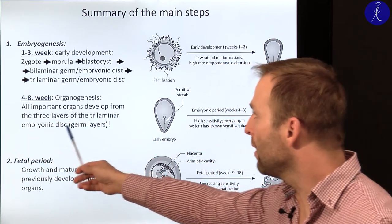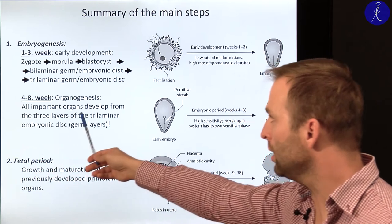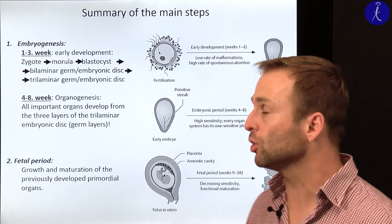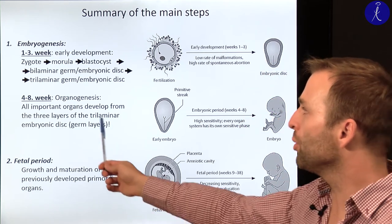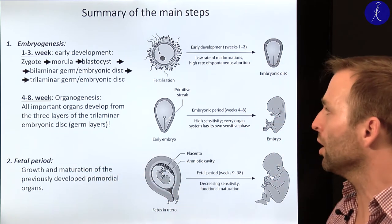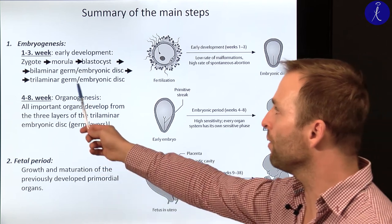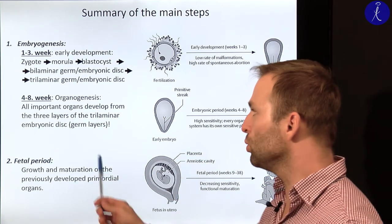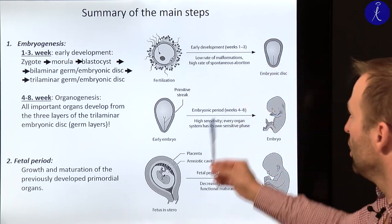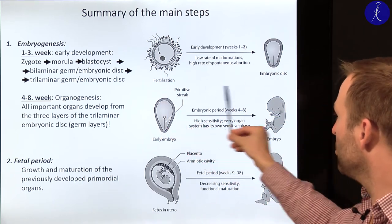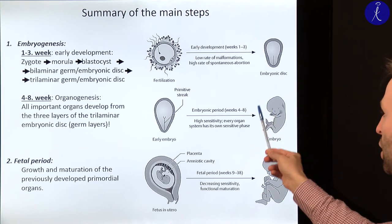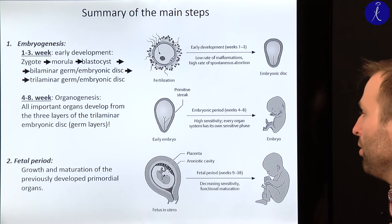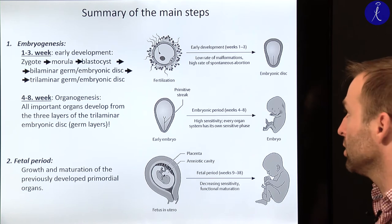The next phase during embryogenesis is called organogenesis — the building of organs and organ systems of the body. During this phase, all important organs develop from one of the three layers of the trilaminar embryonic disc, which are called germ layers. From the embryonic disc you basically have the embryo, which has a completely recognizable human form with all of the organ systems that make us human.